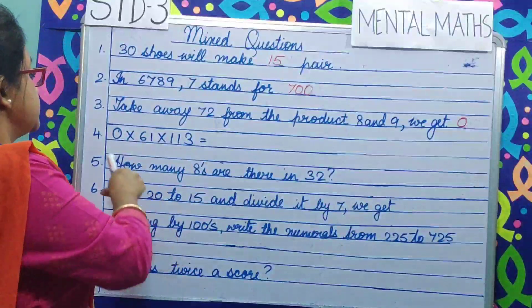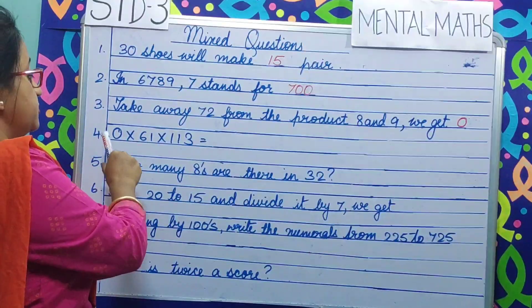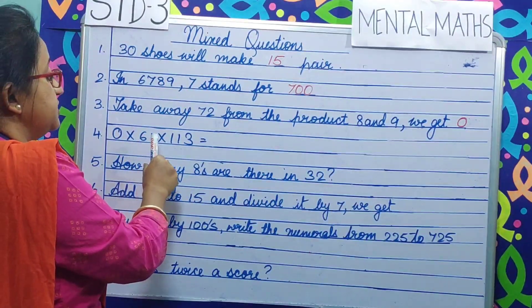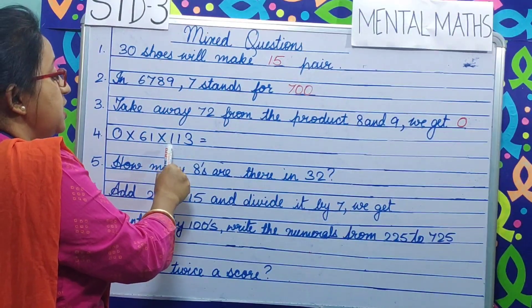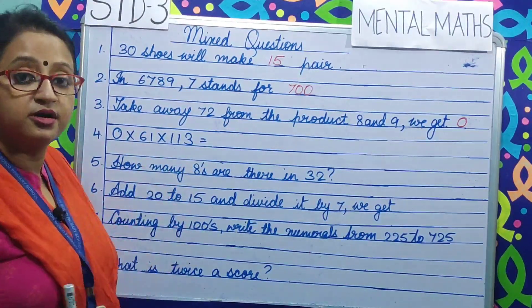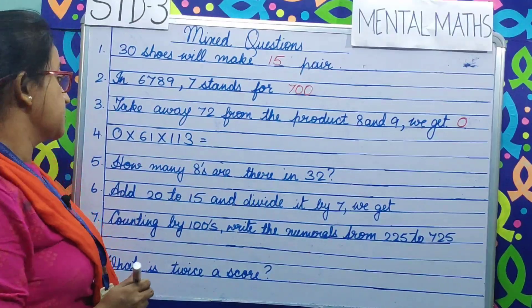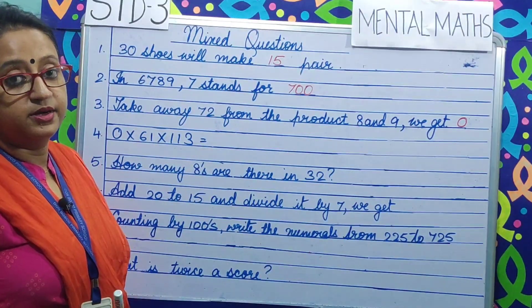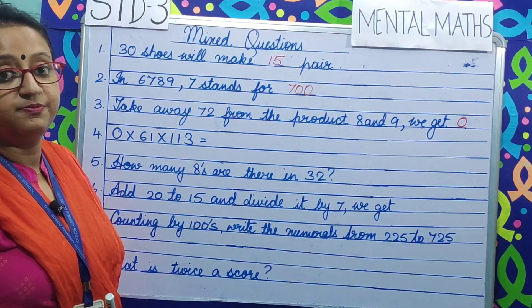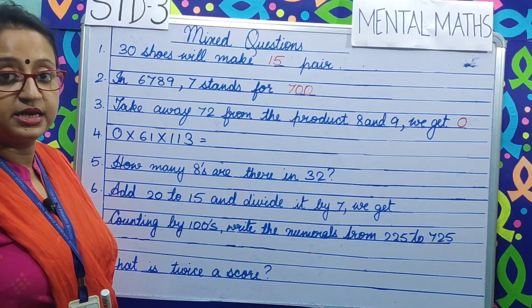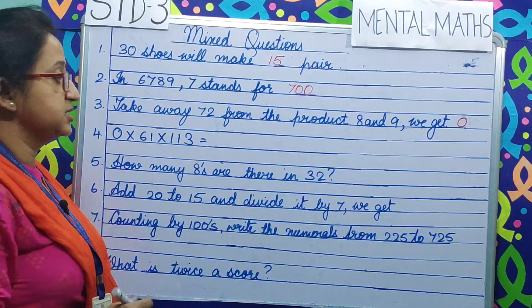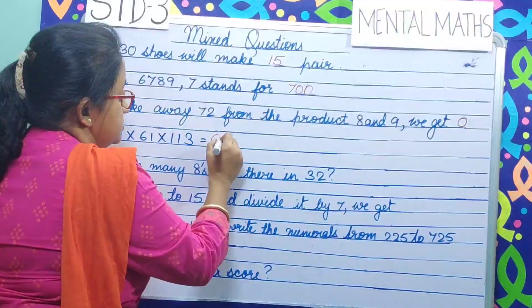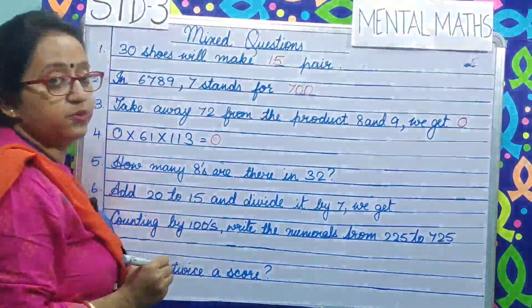Question number 4. 0 multiplied by 61 multiplied by 113. Any number multiplied by 0 makes it 0.